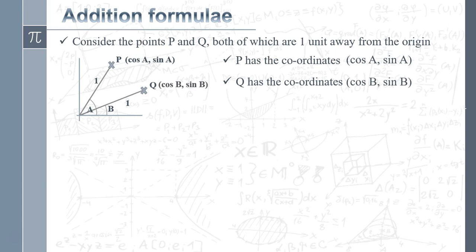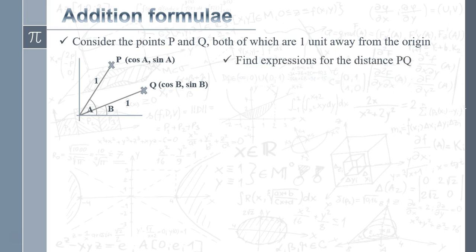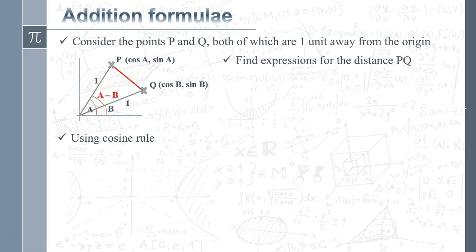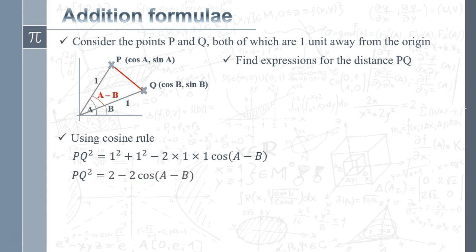Similarly, Q has the coordinates (cos B, sin B). Now I'm going to come up with an expression for the distance PQ. The first way is using the cosine rule on triangle OPQ. The angle between OP and OQ is clearly A minus B. Using the cosine rule: PQ² = 1² + 1² − 2(1)(1)cos(A − B), which simplifies to PQ² = 2 − 2cos(A − B).